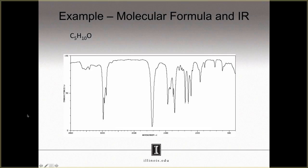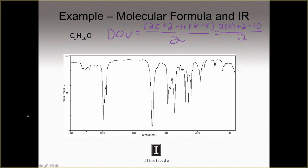The molecular formula allows us to calculate the degrees of unsaturation for the compound. Degrees of unsaturation is equal to 2 times the number of carbons, plus 2, minus the number of hydrogens, plus the number of nitrogen atoms, minus the number of halogen atoms, all over 2. If we plug in our values, we see that we have 2 times 5, plus 2, minus 10, all over 2, because we have no nitrogen atoms and no halogen atoms.